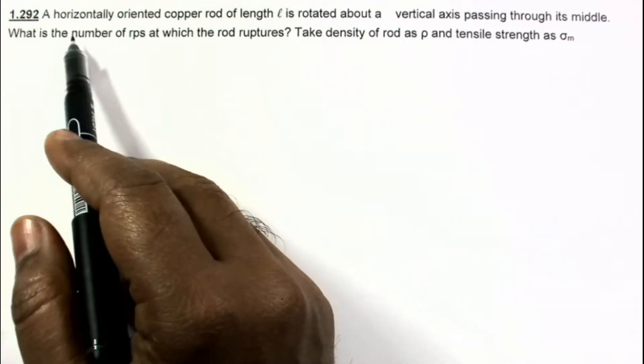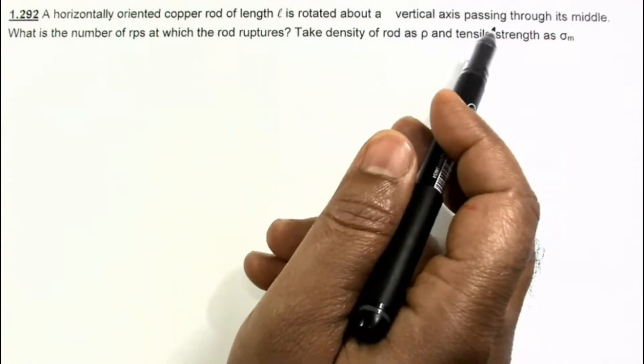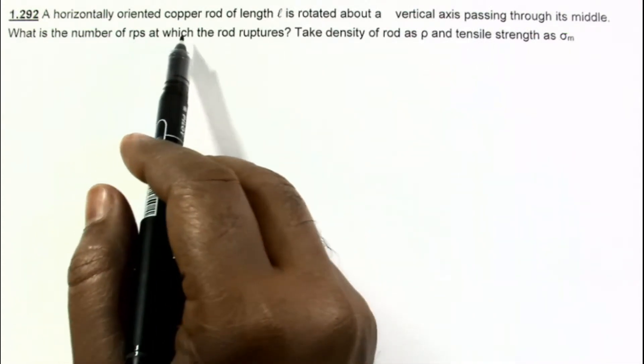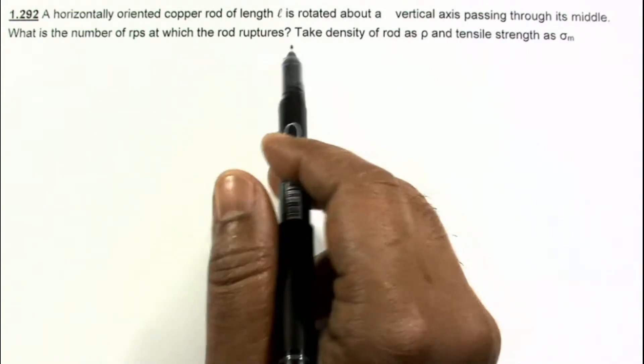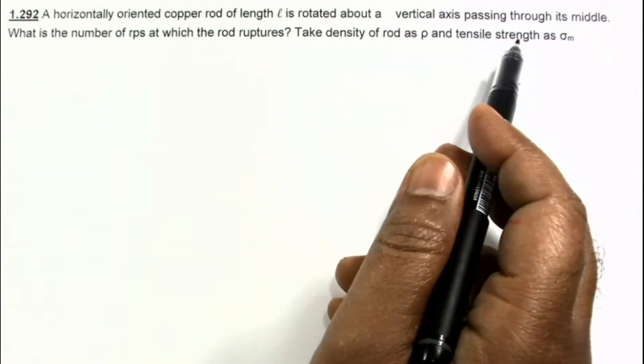In this problem, a horizontally oriented copper rod of length l is rotated about a vertical axis passing through its middle. What is the number of revolutions per second at which the rod ruptures? Take density of rod as ρ and tensile strength as σ_m.